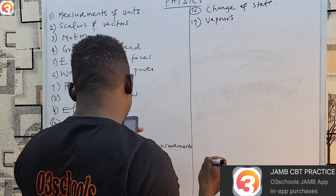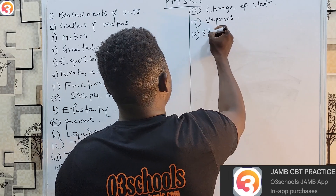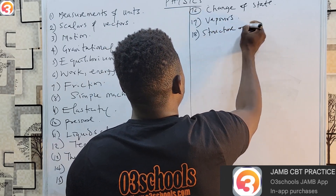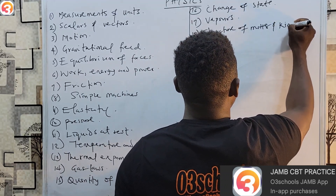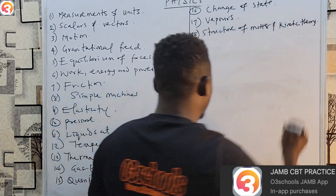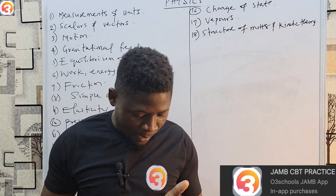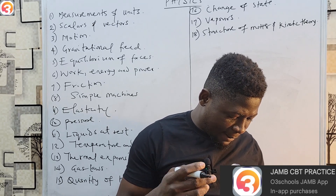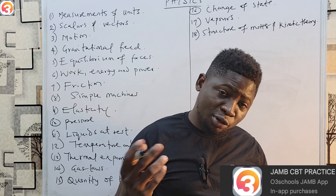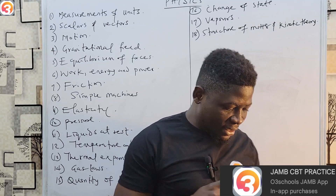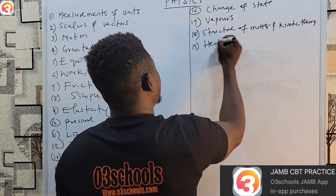The seventeenth topic is vapors — we look at saturated and unsaturated vapors. The eighteenth topic is structure of matter and kinetic theory, which covers the molecular nature of matter, molecular theory, and explanations of Brownian motion and diffusion. The nineteenth topic is heat transfer.